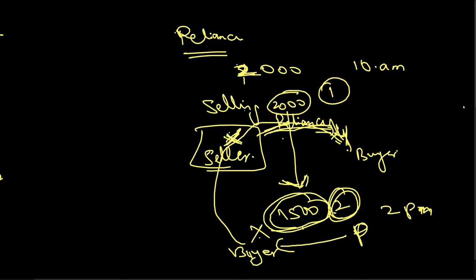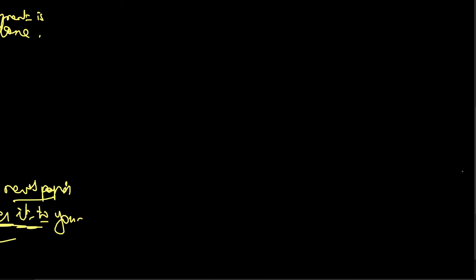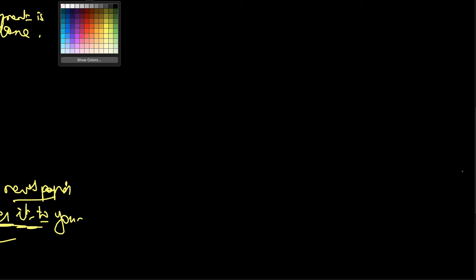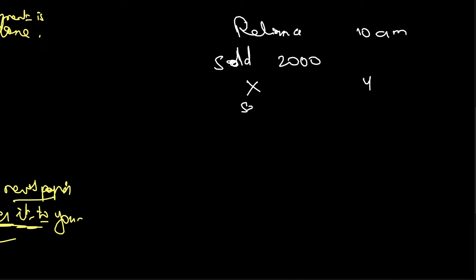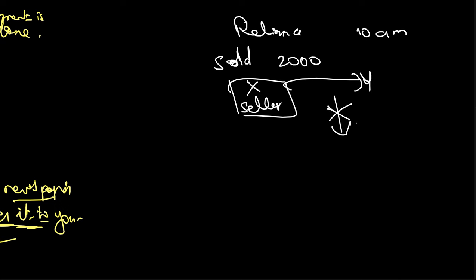Case 2: what if the market doesn't fall? What if Reliance doesn't fall? At 10 a.m. you saw negative news, the price was 2,000 and you sold. But when you wake up at 2 p.m., instead of the price coming down, it has gone up — maybe because what you heard in the morning was fake news. The price has gone up to 2,500.